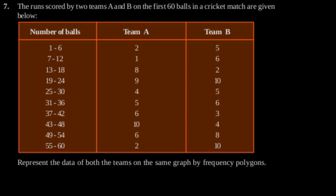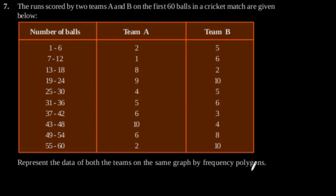Exercise 14.3, Question number 7. The runs scored by two teams A and B on the first 60 balls in a cricket match are given below. Represent the data of both teams on the same graph by frequency polygons.